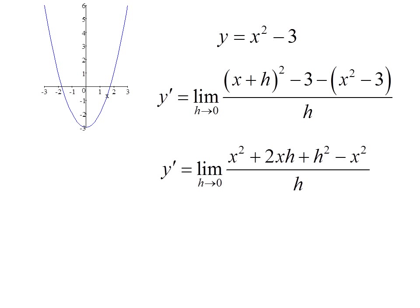So we expand the binomial square and eliminate the parentheses. That allows us to cancel the x squared and then cancel an h.